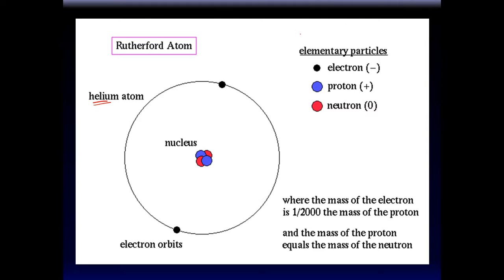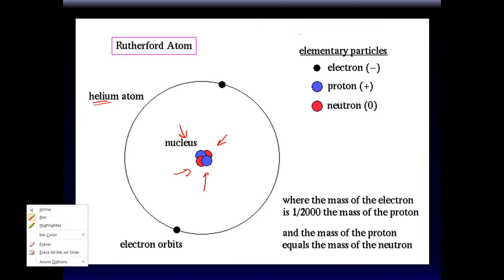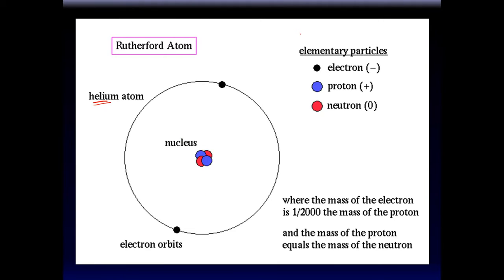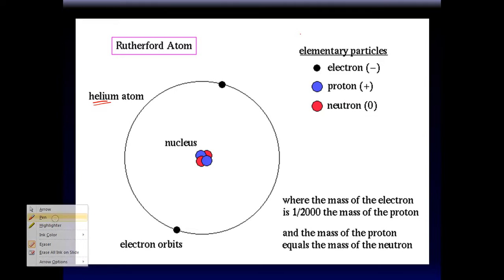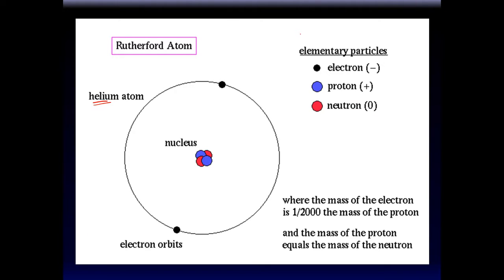What about the strong and weak nuclear forces? If two of the four forces have the word 'nuclear' in them, they must be very important — they're inside the nucleus. Protons attract electrons because they're opposite charges, and electrons repel each other. If two electrons come toward each other, they'll be repelled.